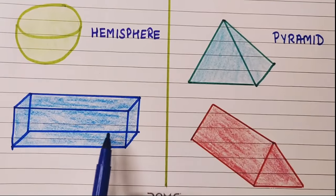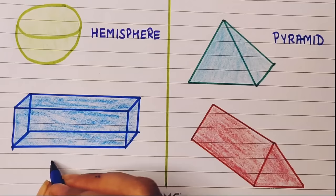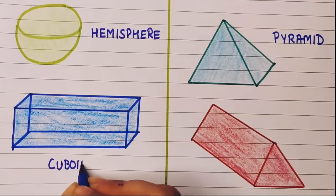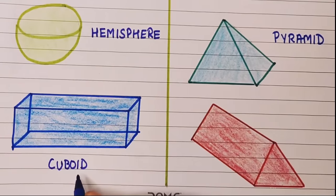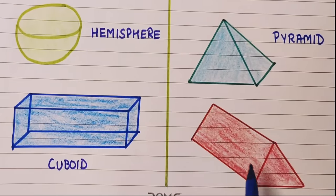The next shape is rectangular three-dimensional structure. This is a cuboid: C-U-B-O-I-D, cuboid.